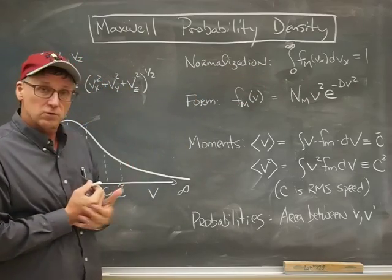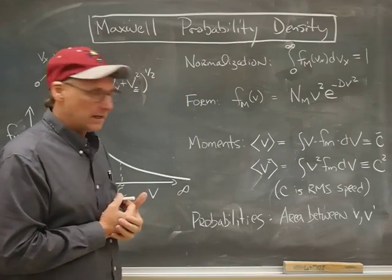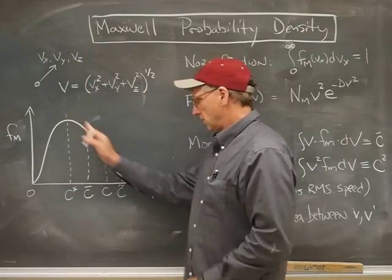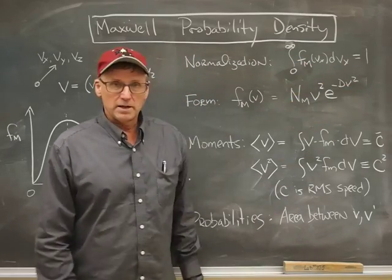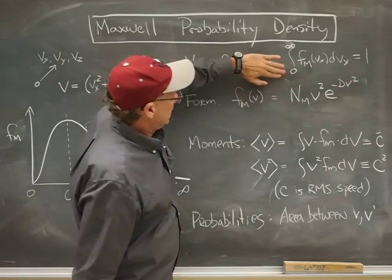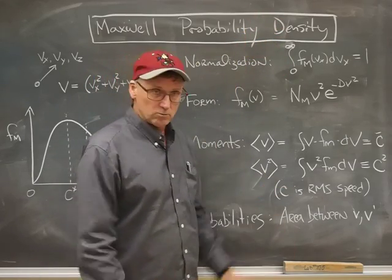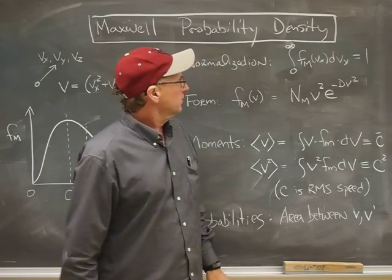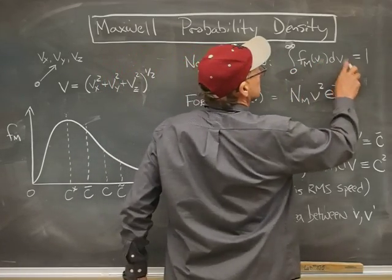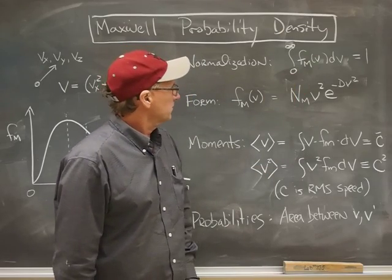There's a condition of normalization that we impose to create this probability density. That idea there is that the whole area under that curve is one. And mathematically, that's given by that formula. Now, notice that we integrate only from zero to infinity, but that's because we start off with speeds at zero. And I'm just integrating the Maxwell function with respect to the speed, and it's going to all add up to one.